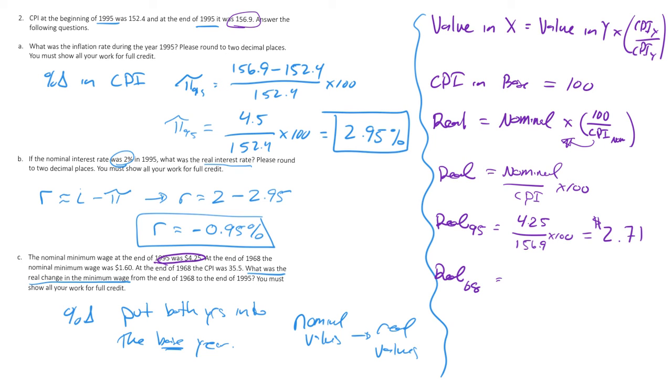Let's find the real value in 1968. We do the same thing, 1968, we saw $1.60 divided by the CPI, which was 35.5. We'll multiply that by 100. Use our calculator and get $4.51.